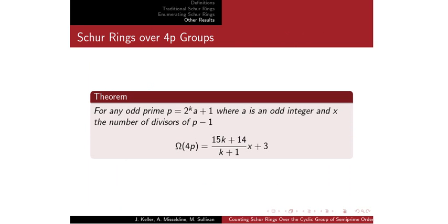Another result we have — there's a separate presentation about Schur rings over 4P groups that my research partner Joseph Keller should have presented, which should not be too hard to find. For any prime of the form 2^k · A + 1, so a prime where it's 4 times some prime, we get a formula for the number of Schur rings over that group. There's a little more cumbersome notation in the paper, but this is a nice formula. There's a separate presentation on that.